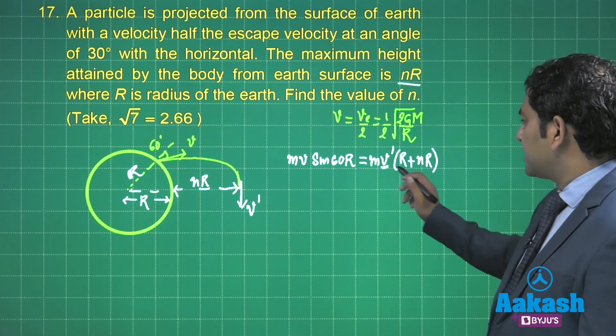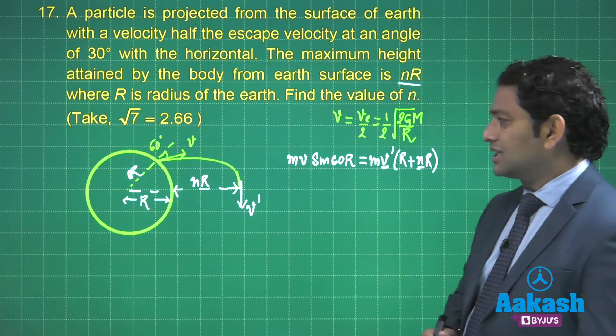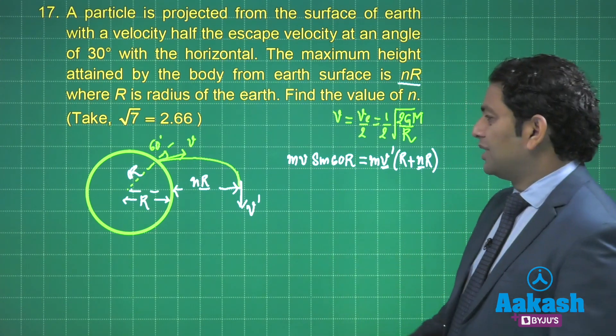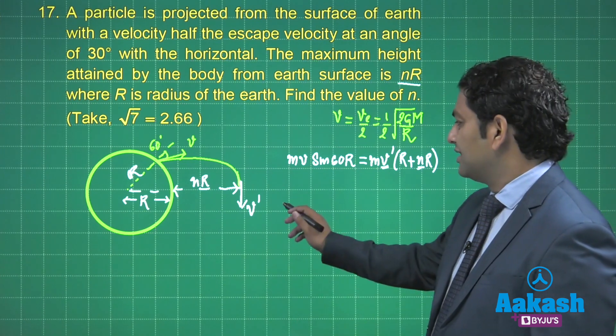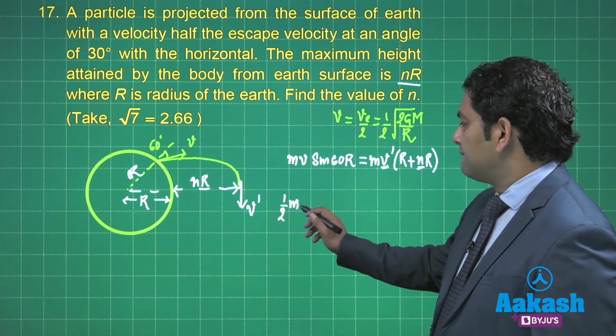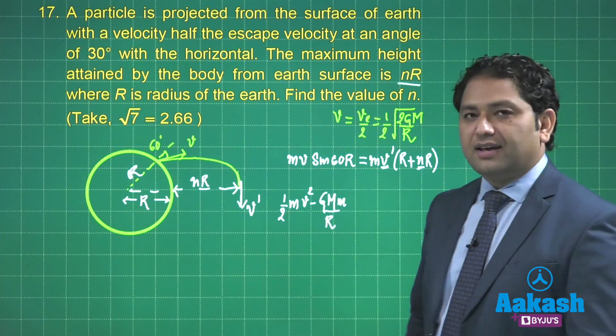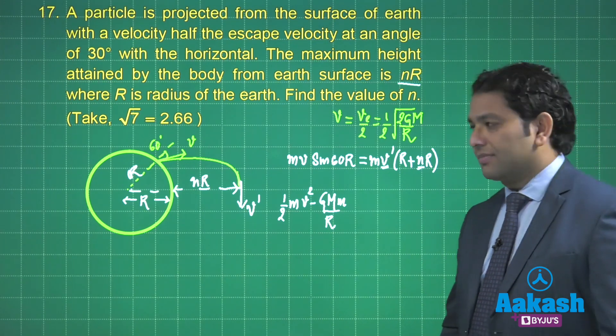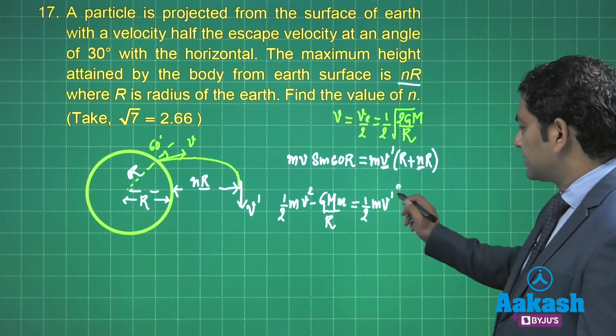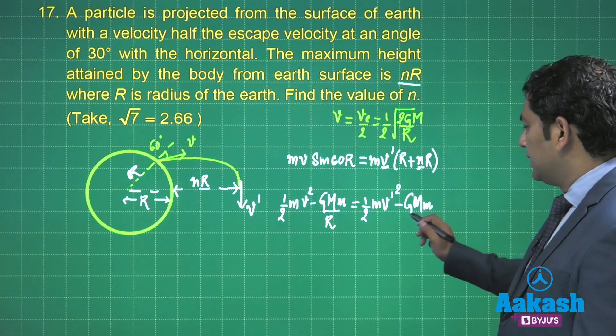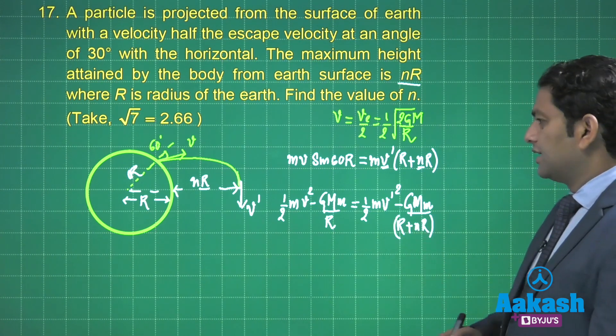But then v' and n are the unknown. So two unknowns. So we got to generate the second equation. We got to generate the second equation. So what will you get? The second equation, the way how we generate is use the energy equation. 1/2·m·v² - GMm/R, the initial mechanical energy, the kinetic plus the potential. And the final is 1/2·m·v'² - GMm/(R + nR). You will get a little bit of quadratic, you need to solve that.